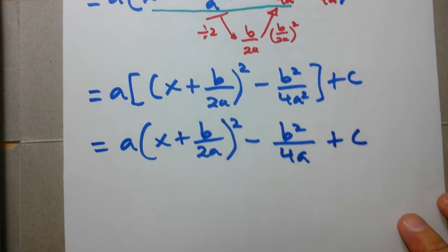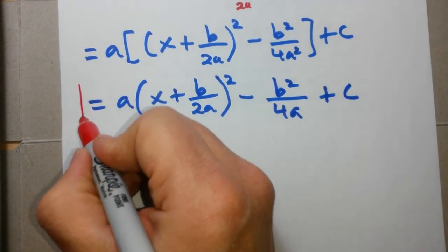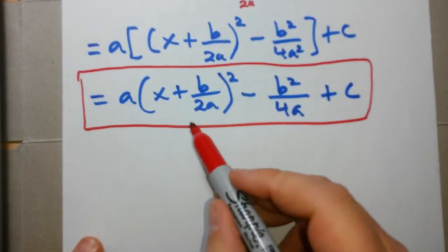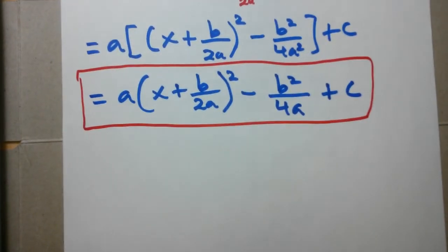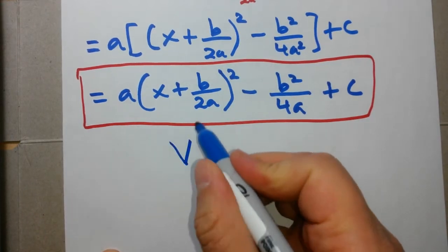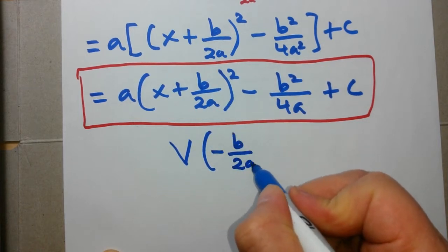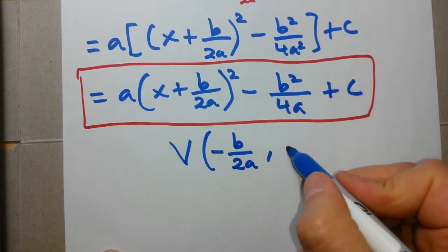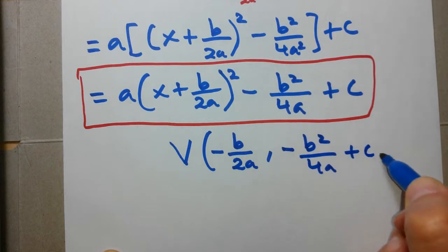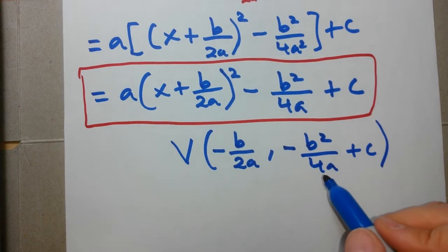So if we were to look at this final equation right here, let's put this in a rectangle, in a box. Okay, if we were to look at this, what would be the vertex of this equation? Well, the vertex of this equation is negative b over 2a comma, and the y value would be negative b squared over 4a plus c, which we can actually simplify by adding those two fractions, but I'll leave it like that for now.